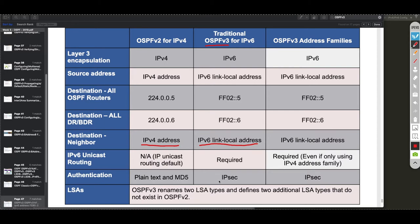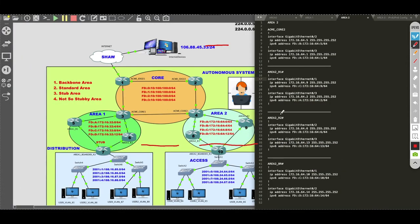Another important difference is that authentication in OSPF version 3 is done via IPsec, whereas OSPF version 2 uses plain text or MD5. This is a very important distinction. With that said, I'd like to show you the basic configuration I have set up, and then I'm going to apply it.